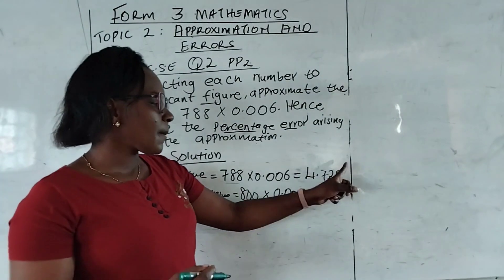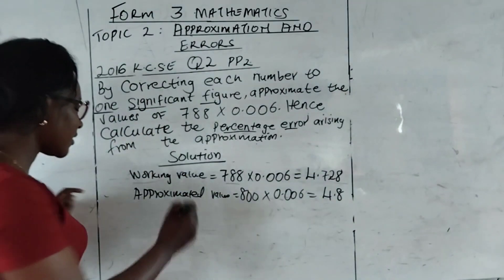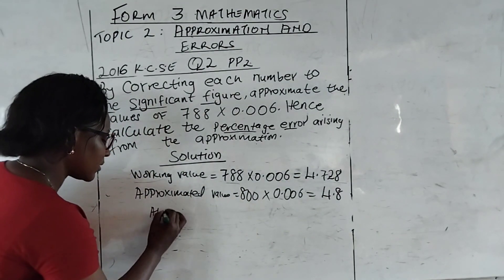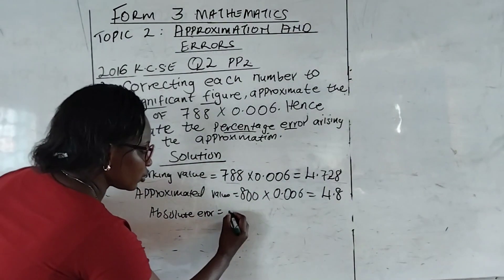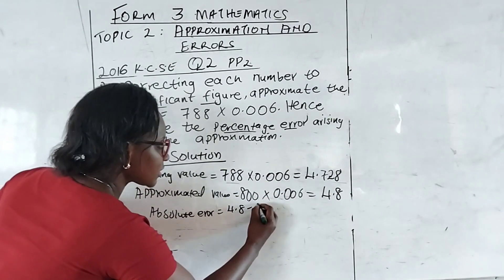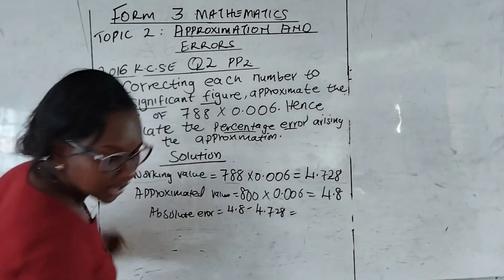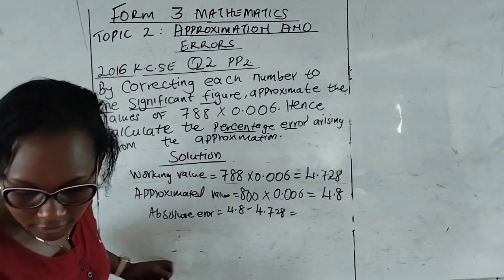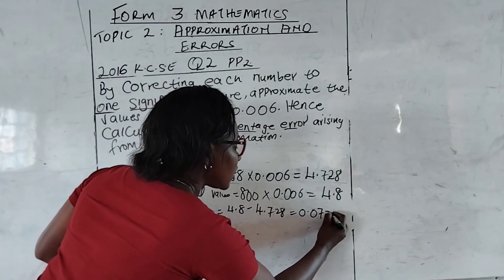I hope now we are following. For this one, now we are going to have approximated value minus the working value to have our absolute error. Absolute error will be 4.8 minus 4.728. And our answer is going to be 0.072.